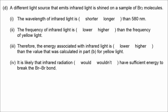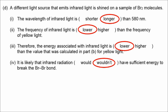In part D, we consider infrared light rather than visible yellow light. Infrared light has longer wavelength, lower frequency, and lower energy compared to visible light. Therefore, it is likely that infrared radiation does not have enough energy to break the bond in bromine molecules.